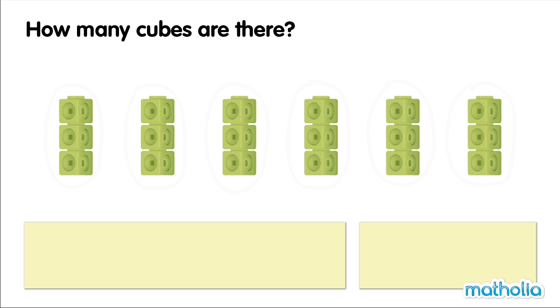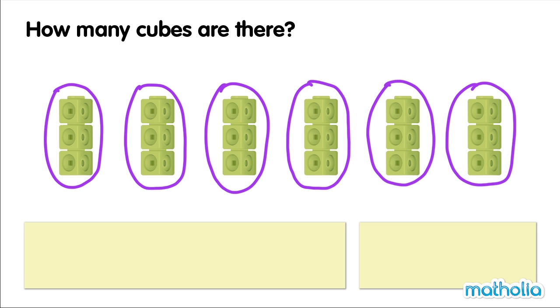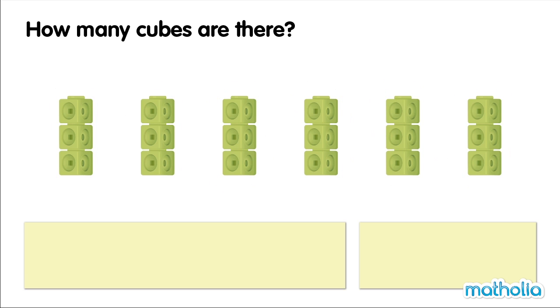How many cubes are there? There are six groups of cubes. There are three cubes in each group. Let's count in threes to find the total. Three,